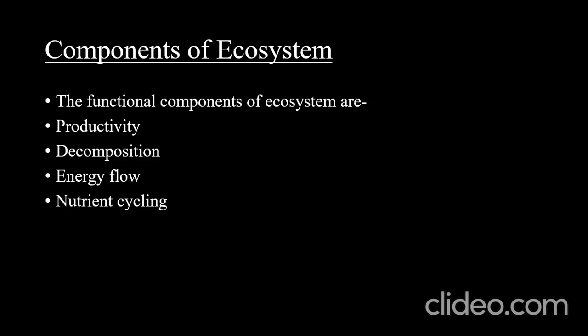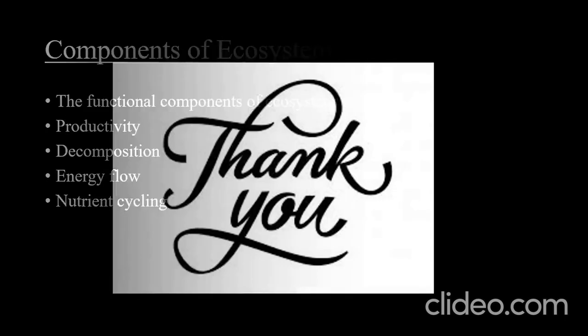At the end of this module, we have learned about what is an ecosystem — a biological community comprising of biotic (living) and abiotic (non-living) components that interact with each other. We also studied stratification — the vertical distribution of different species occupying different levels in a habitat. Finally, we covered the functional components of an ecosystem: productivity, decomposition, energy flow, and nutrient cycling. Thank you.